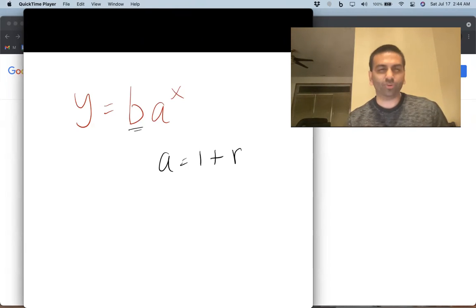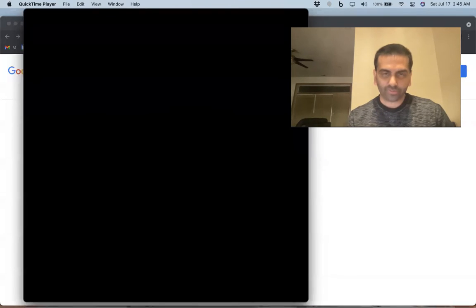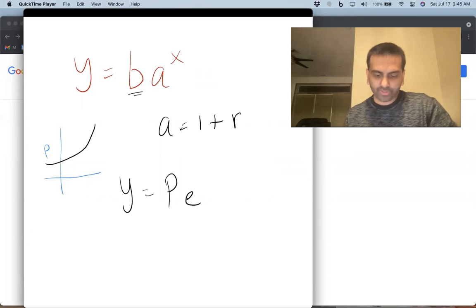And again, it really doesn't matter what you call these letters. Like again, I called it b, but there's this context of compound growth, where you have a certain principle. Principle just means the amount of money that you begin your bank account with. So if P is your principle, you begin with P dollars in the bank, and you're growing by a certain interest rate. So if your interest is compounded continuously, then the formula to use is y equals P e to the rt. So y equals P e to the rt would be the formula.